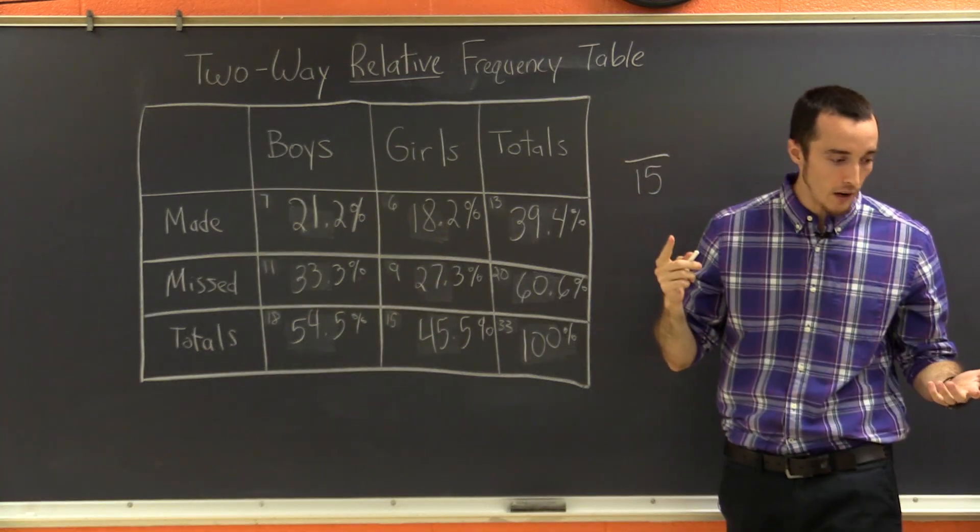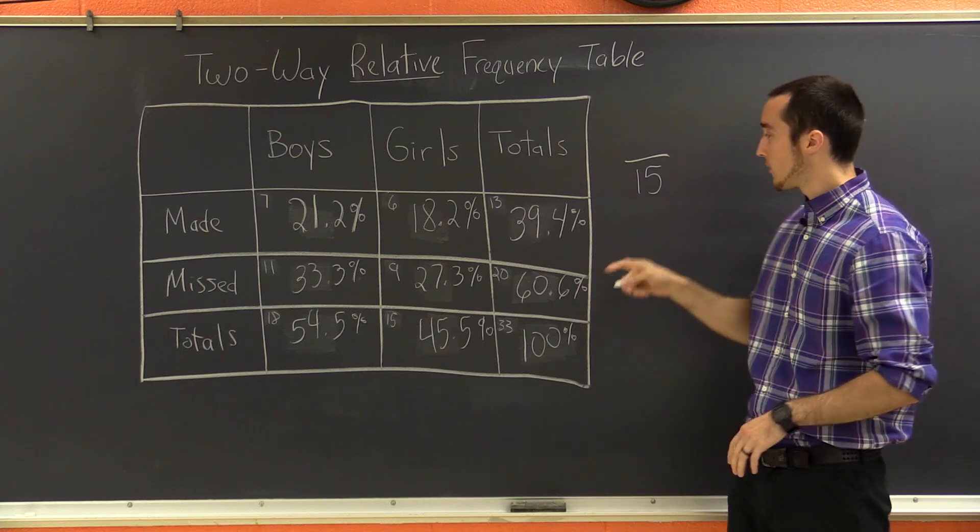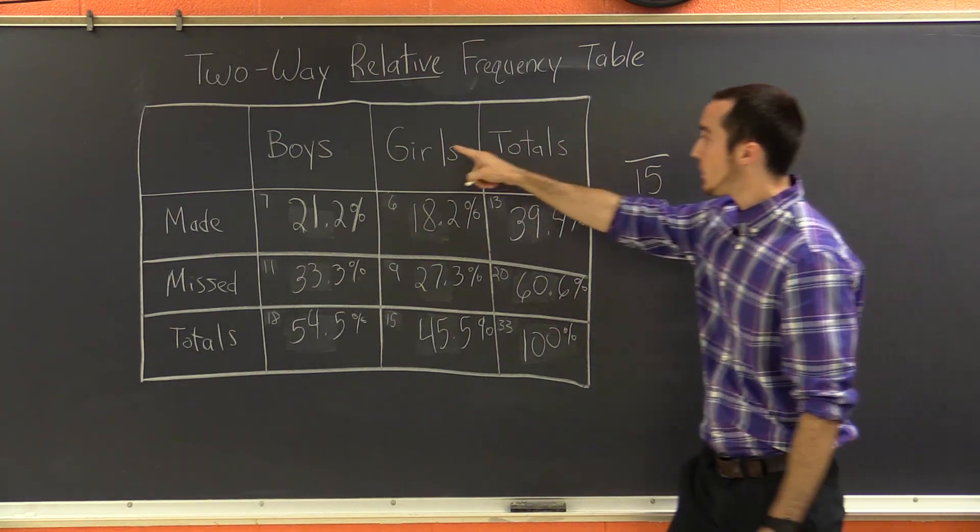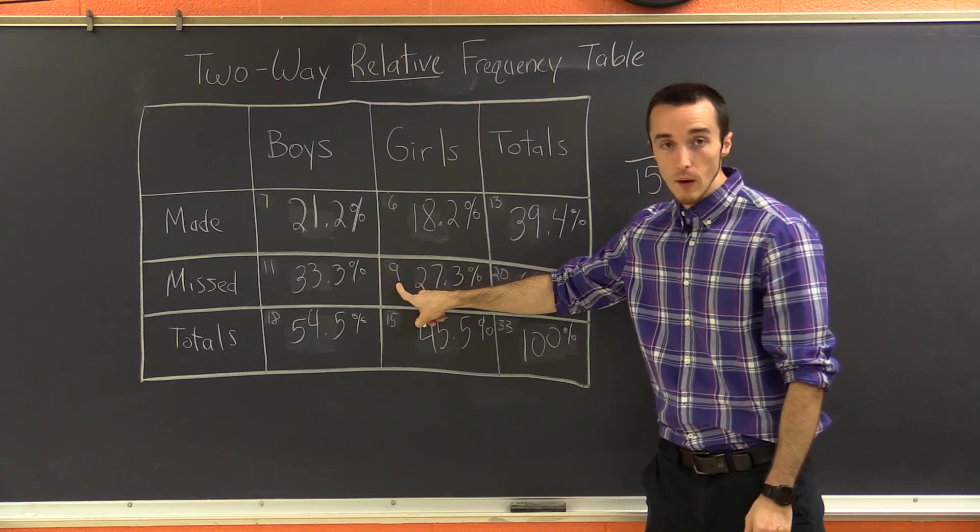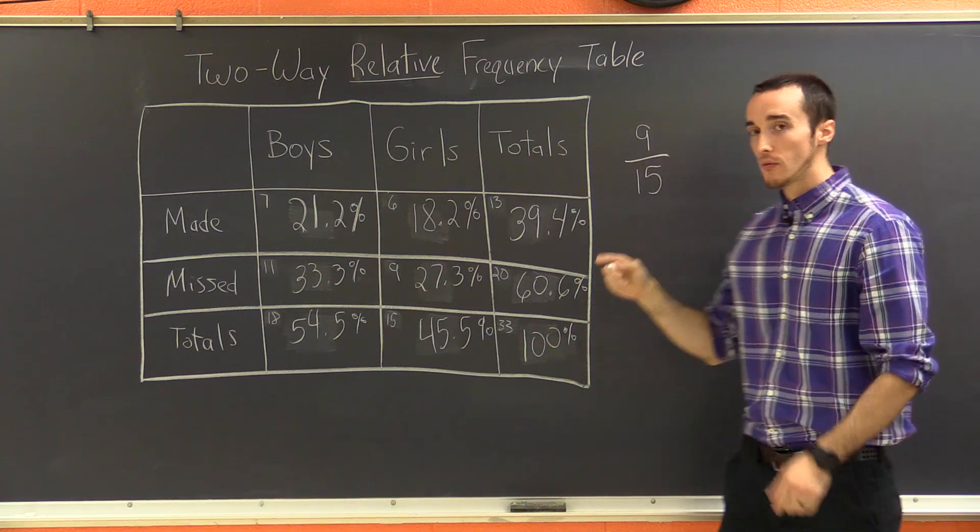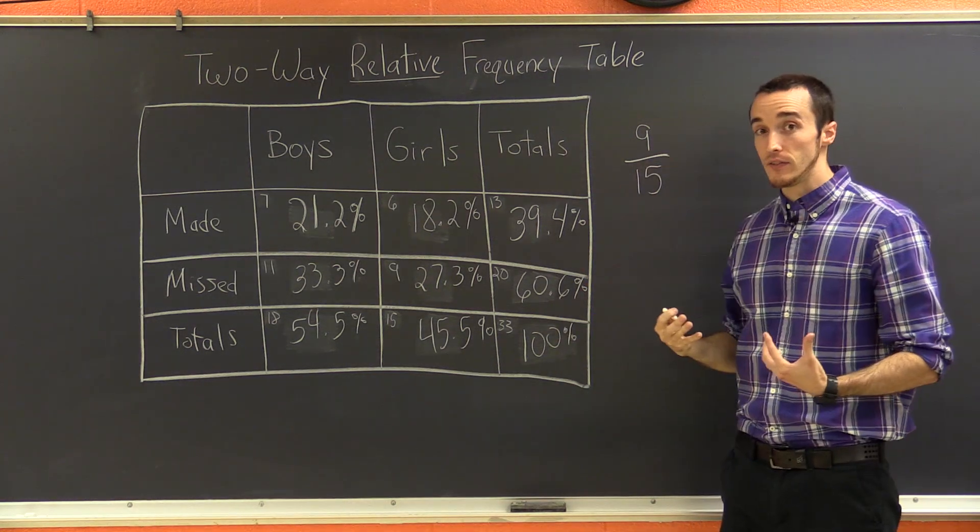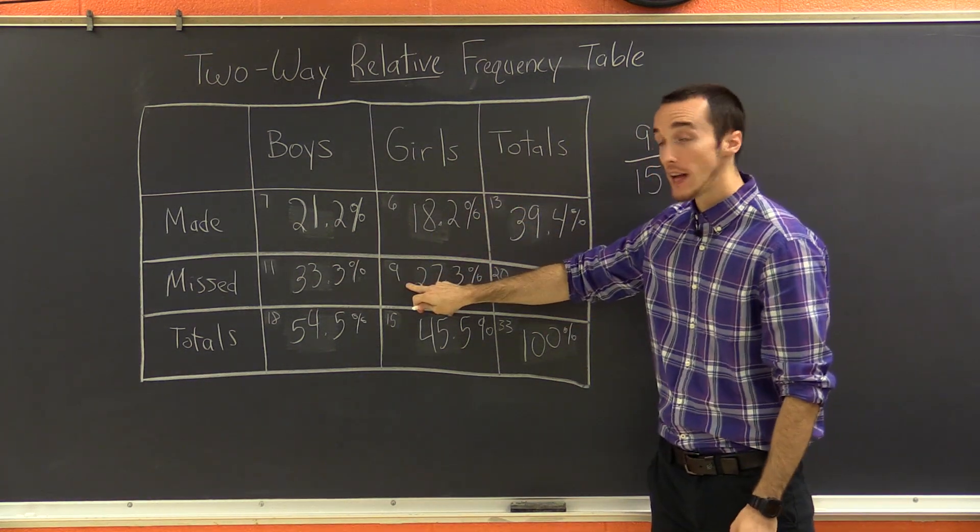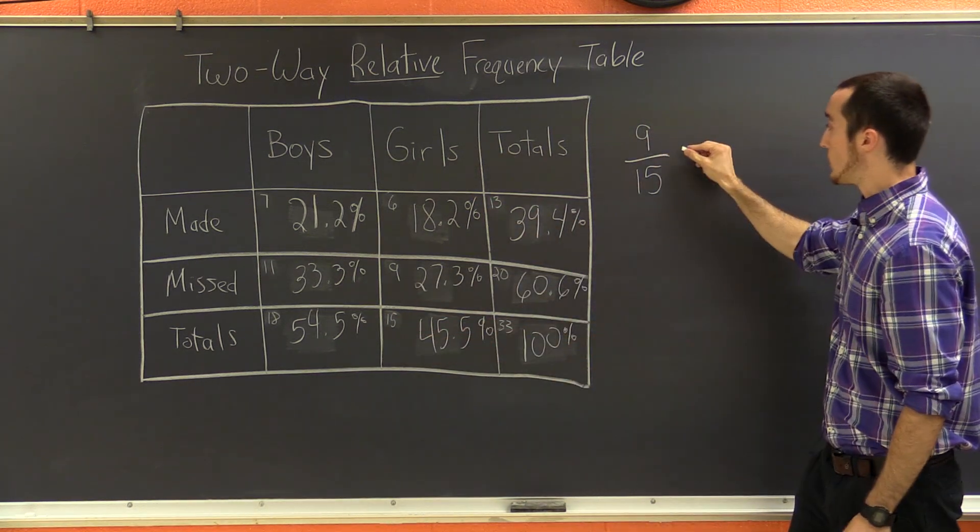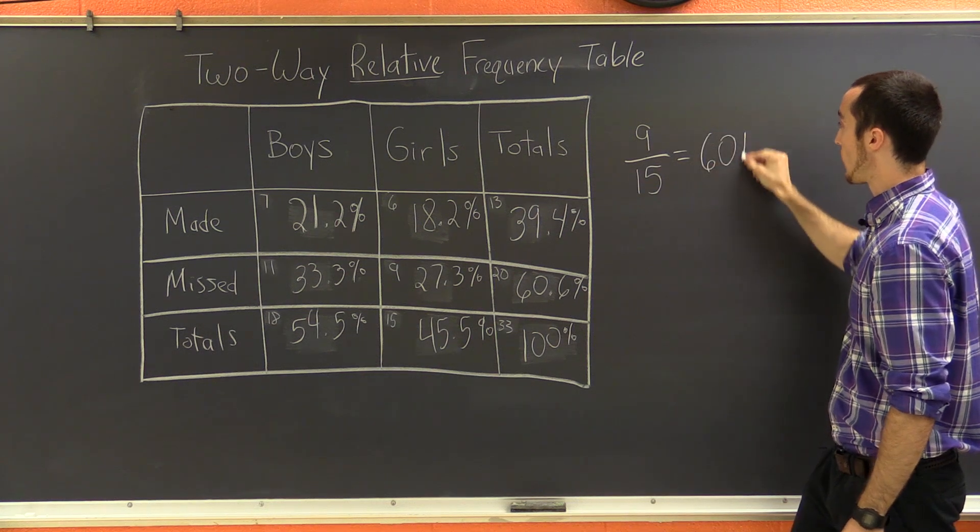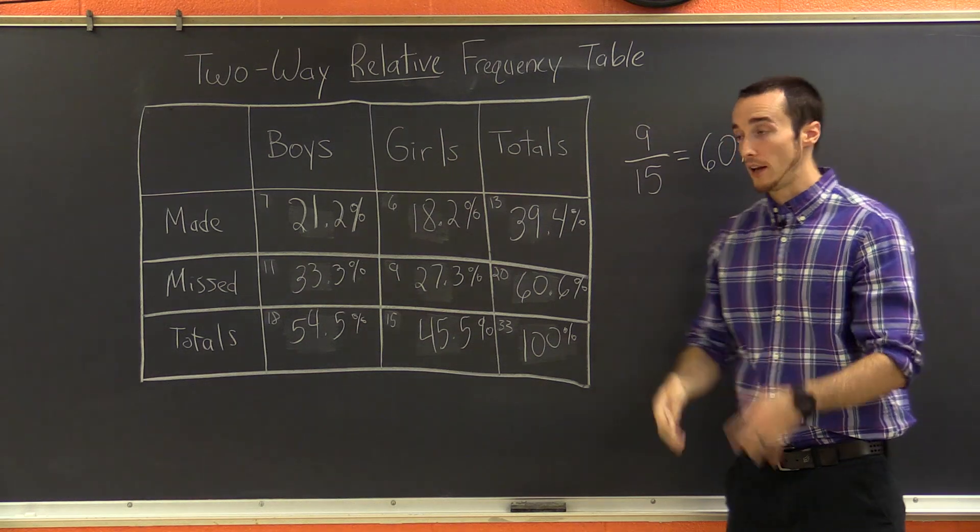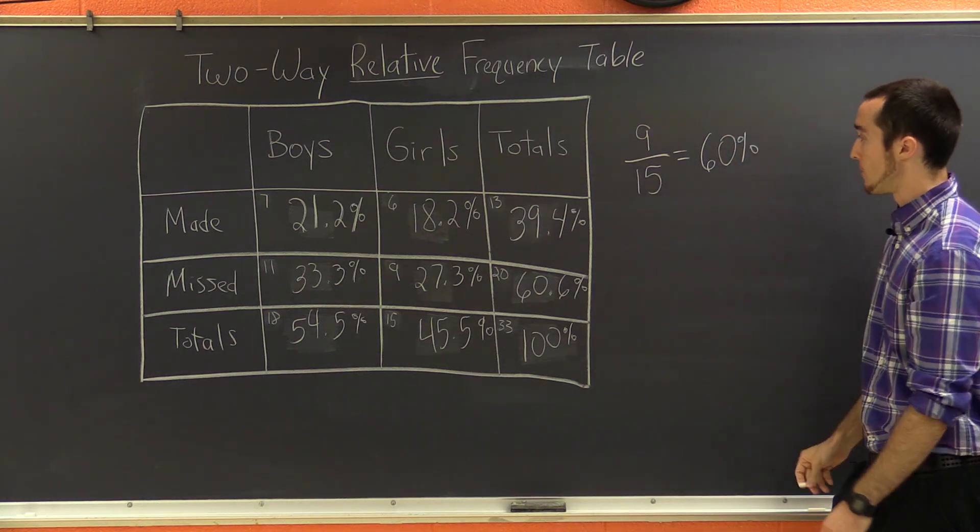Now, what were they looking for? They said, what is the conditional probability that if you are given a girl, she also missed a basket? How many girls missed a basket? If you remember, there were nine girls who missed a basket. So in this case, they want us to find what's the percent 9 out of 15, because that's girls who missed a basket out of the total number of girls. So this, as a percent, is going to be 60%. And all I did there was take 9 divided by 15, get that number, and then multiply by 100.